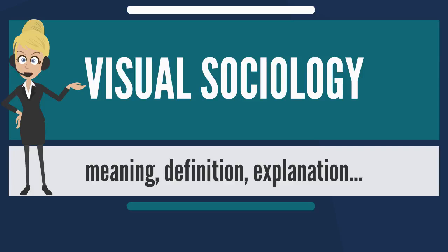So, regardless of how one analyzes the data or what is done with the visual record, sociologists can use cameras to record and preserve data of interest so it can be studied in detail. Visual recording technology also allows us to manipulate the data. Visual recordings have long been employed by natural scientists because they make it possible to speed up, slow down, repeat, stop, and zoom in on things of interest.